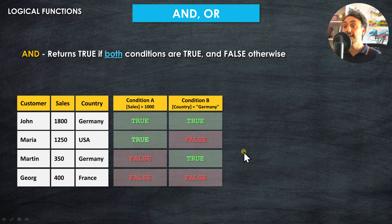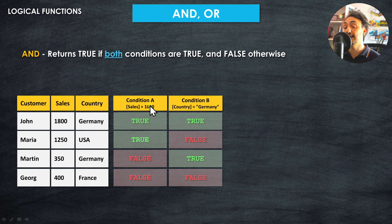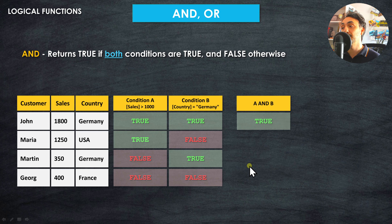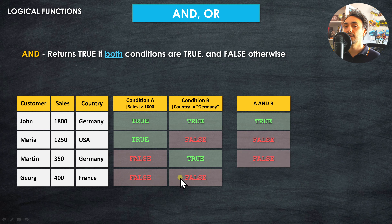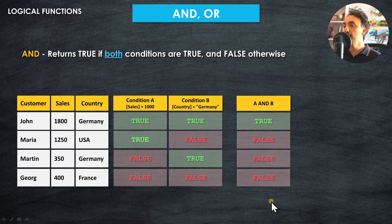The AND operator returns true only if both conditions are true, and false otherwise. For the first customer, condition A is true and condition B is true, so the output is true. For the second customer Maria, condition A is true but condition B is false, so it's false. For the third customer Martin, condition A is false and condition B is true — both must be true, so it's false. For the last customer, both are false so the result is false. The AND operator is very restrictive.